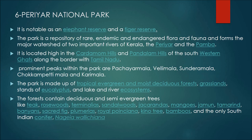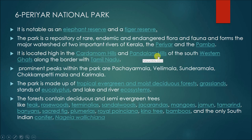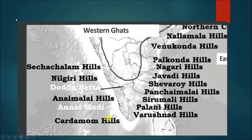Periyar National Park is notable as an elephant reserve and tiger reserve, and is the largest national park of Kerala. This park is a repository of rare, endemic, and endangered flora and fauna, forming the major watershed of two important rivers of Kerala — the Periyar and the Pamba. It is located in the Cardamom Hills and Pandalam Hills in the south of the Western Ghats. Anamudi is the highest peak of the Anaimalai Hills, and Doddabetta is the highest peak of the Nilgiri Hills.